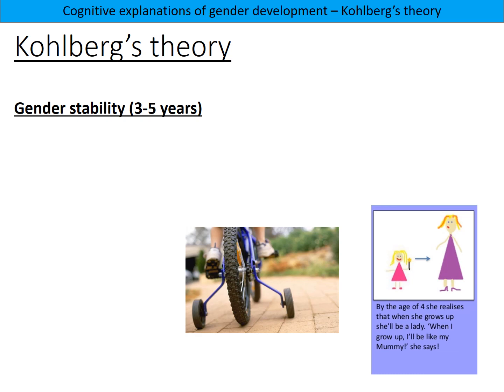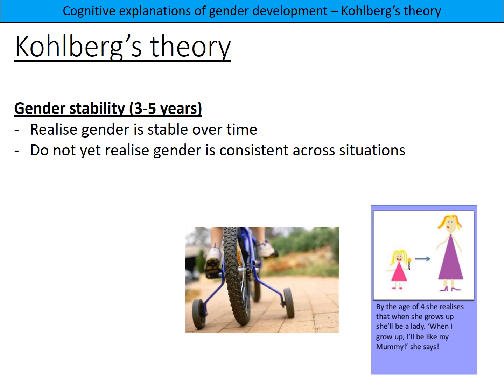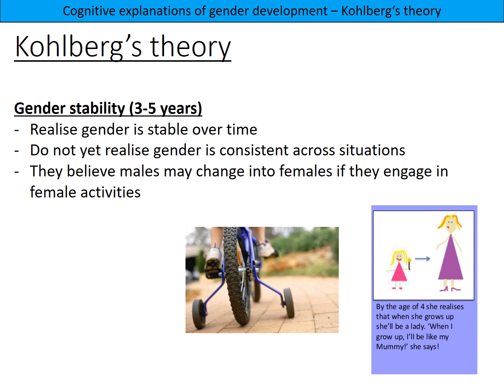The second stage is the gender stability stage, at three to five years old. Children realize that gender is stable over time — they understand that boys will become men and girls will become women. However, they don't yet realize that gender is consistent across all situations. For example, they might think a girl with short hair has changed into a boy. A four-year-old might say, 'When I grow up I'll be like my mummy.'